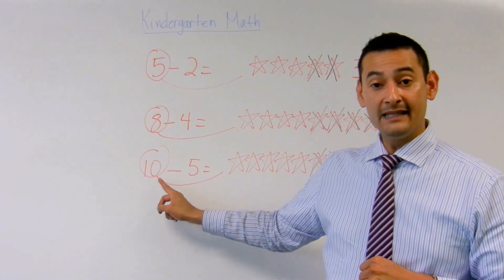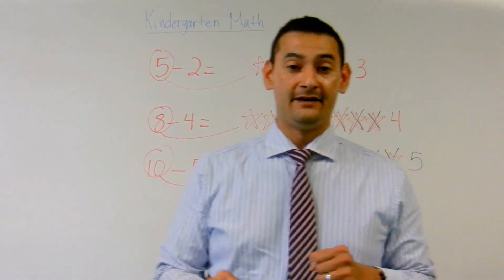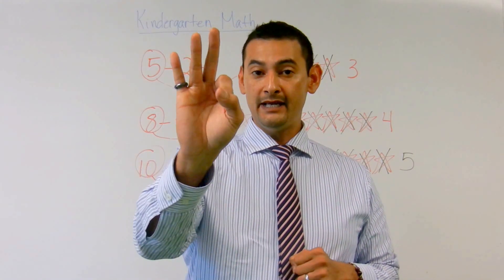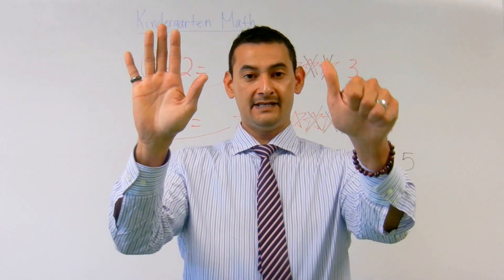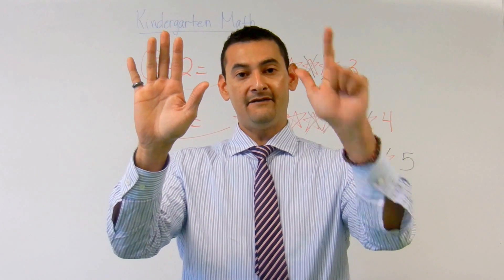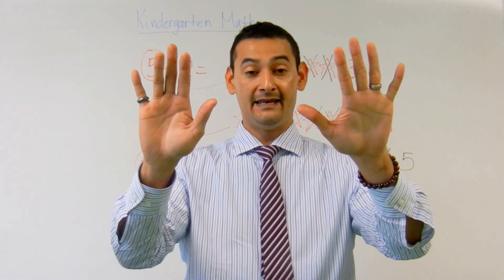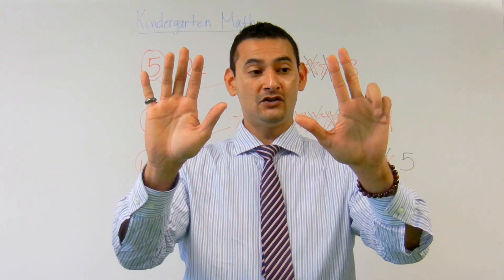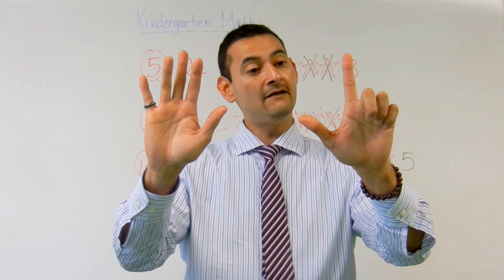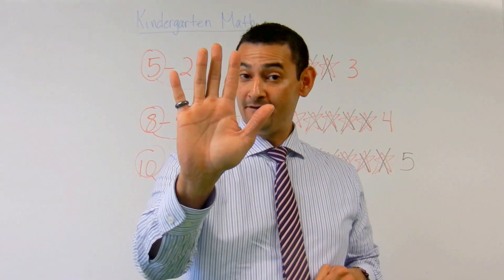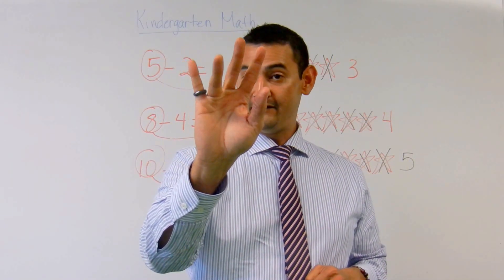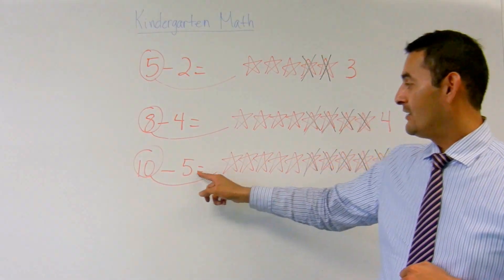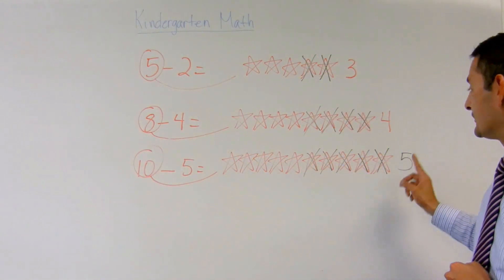Now let's look at the last one — ten take away five. I'm going to count to ten: one, two, three, four, five, six, seven, eight, nine, ten. And I'm going to take away five — one, two, three, four, five. How many do I have? One, two, three, four, five. I've got five. Ten take away five equals five.